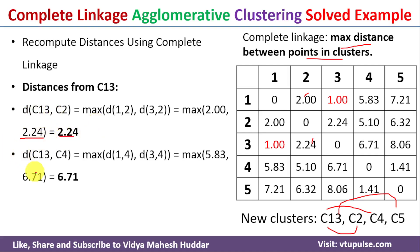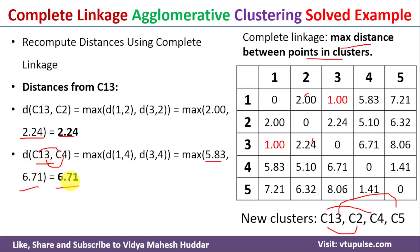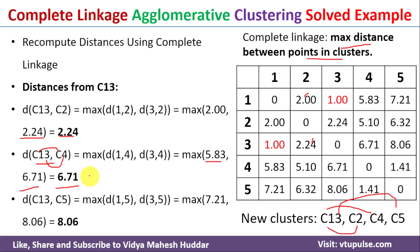Next we calculate the distance between cluster C13 and C4, which is the maximum of the distance between data points 1 and 4 (5.83) and data points 3 and 4 (6.71). The maximum is 6.71, so the distance between C13 and C4 is 6.71. Similarly, the distance between C13 and C5 is 8.06.